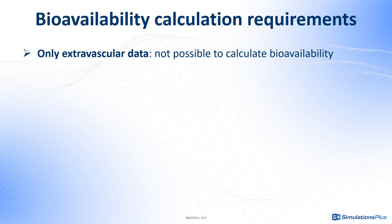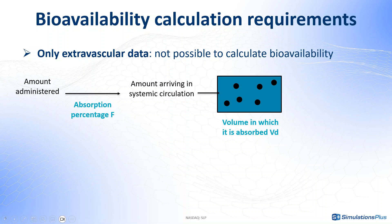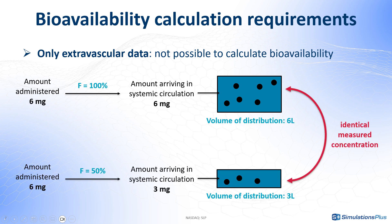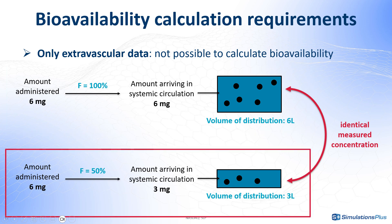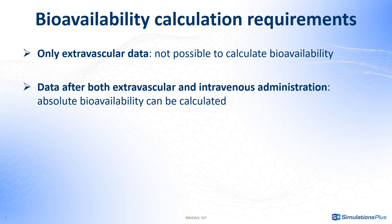If you have only extravascular data, it is not possible to calculate the absolute bioavailability because it is not possible to identify both the absorption percentage and the volume in which it is absorbed. In other words, the concentration observed in the blood would be the same for a large fraction of the dose absorbed and a large volume of distribution, or on the other hand, for a small fraction absorbed and a small volume of distribution. However, if you have PK data for both extravascular and intravenous doses, it is possible to calculate the absolute bioavailability by comparing the total exposure in both cases.